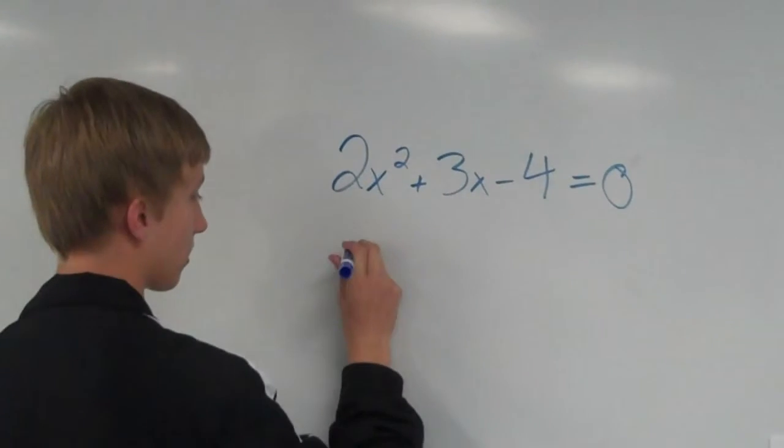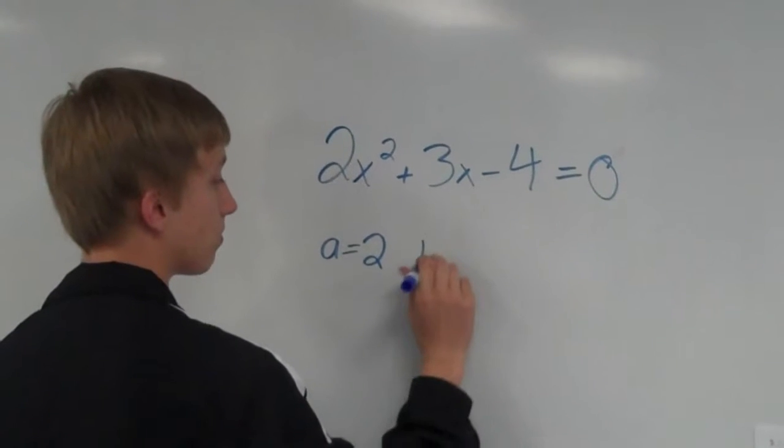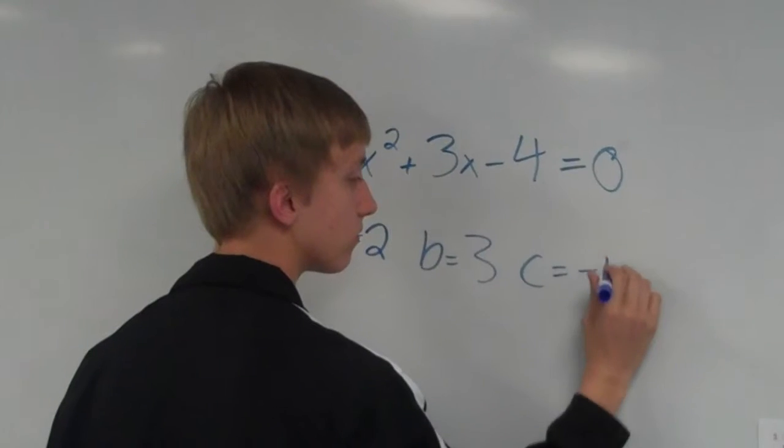From here, I can conclude that a equals 2, b equals 3, and c equals negative 4.